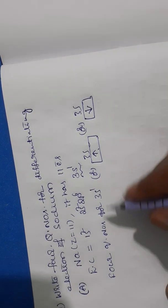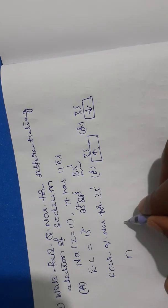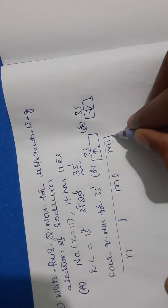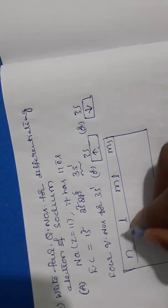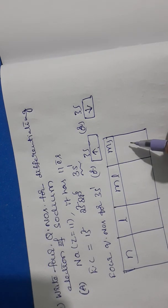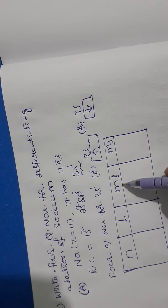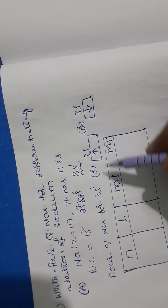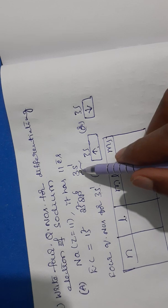So now four quantum numbers for this 11th electron which goes into 3s. The four quantum numbers are: N, L, ML, and MS. This electron is in 3s.